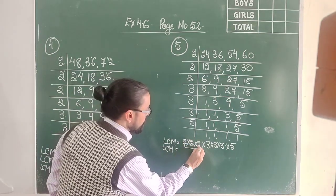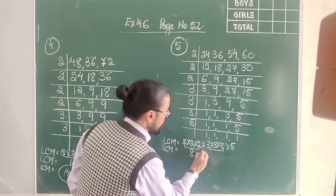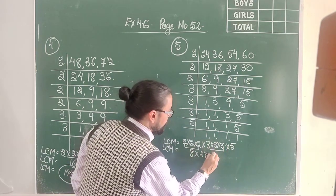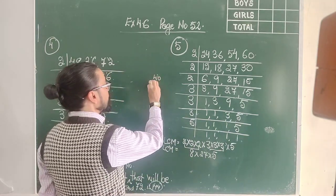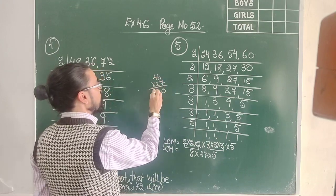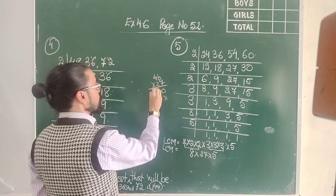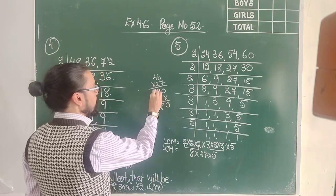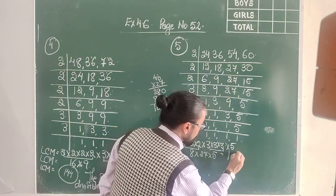So: 2 × 2 = 4, 4 × 2 = 8. And 3 × 3 = 9, 9 × 3 = 27. And 5. We know 8 × 5 = 40. So all I have to do is take 40 and multiply it by 27. 40 × 27: 7 × 40 = 280, 20 × 40 = 800. My answer is 1,080.